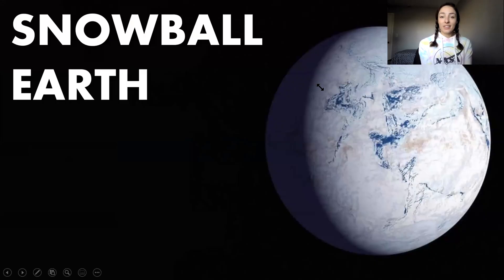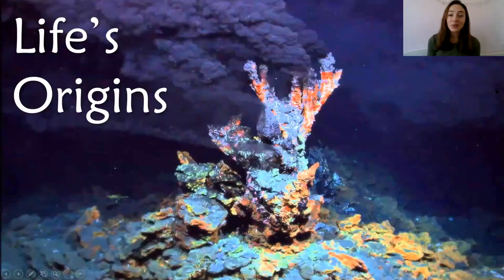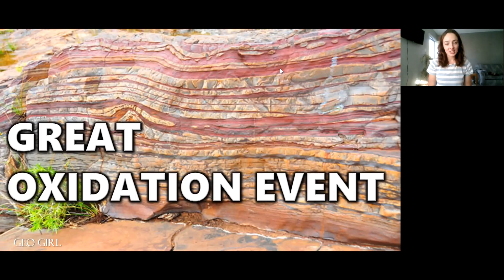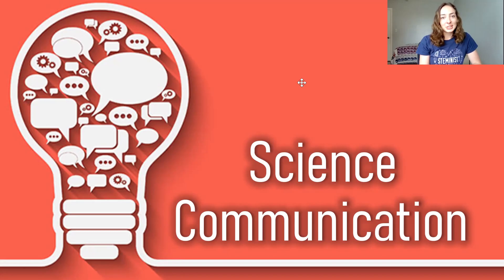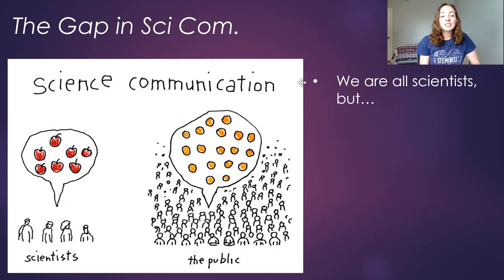Today we're going to be talking about brachiopods, snowball earth, strontium isotopes, delta depositional environments, the origins of life on earth, biogeochemical cycles, mineralogy, the great oxidation event, and science communication — specifically the current gap in science communication and how we can bridge that gap. Here's a little cartoon showing scientists thinking of apples and the public thinking of oranges when trying to convey the same concept.